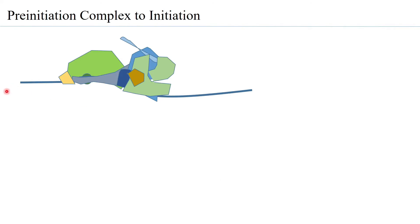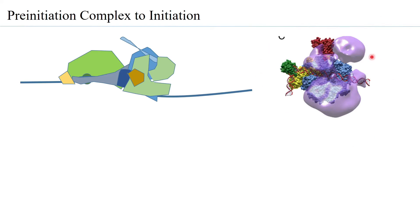Let us look at what happens thereafter and what are the important features responsible for taking the pre-initiation complex to initiation. This is an overview of how TF2H comes and binds to RNA polymerase. In blue is the RNA polymerase, in yellow is TF2B, and TBP represents TF2D. You can see how the DNA is bent and XPB is positioned to open the DNA.